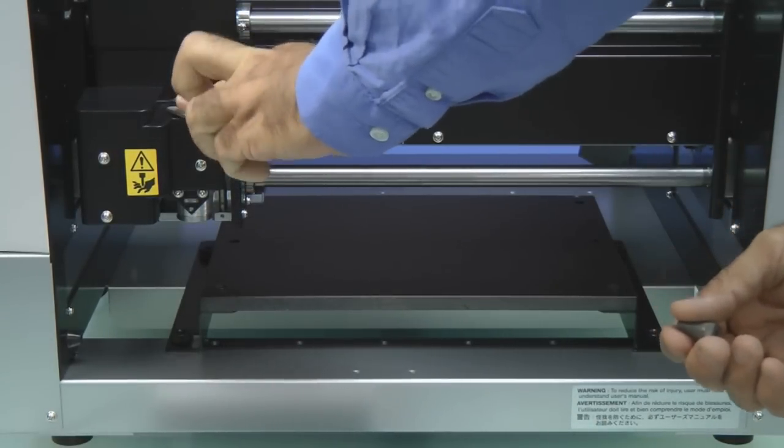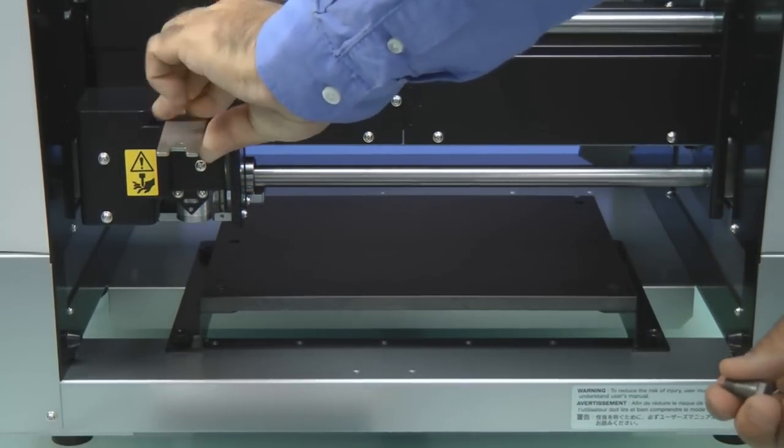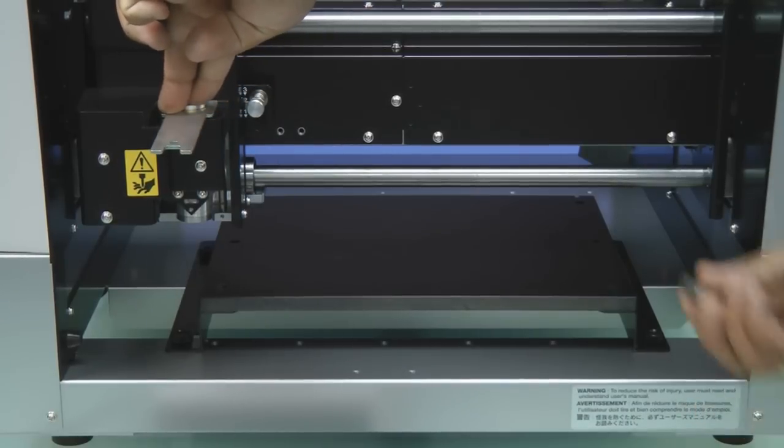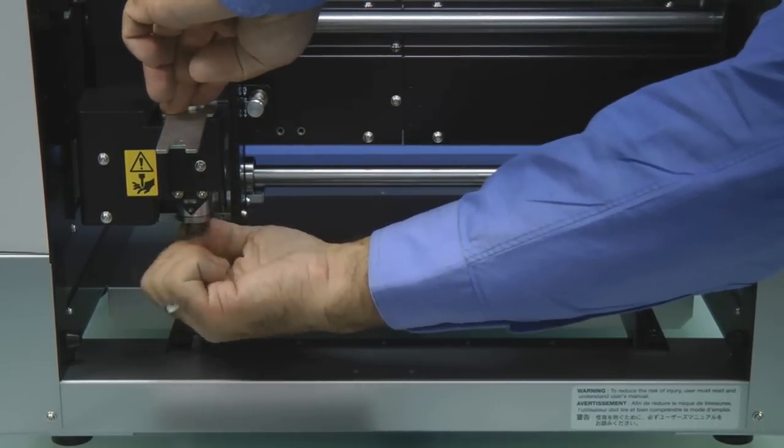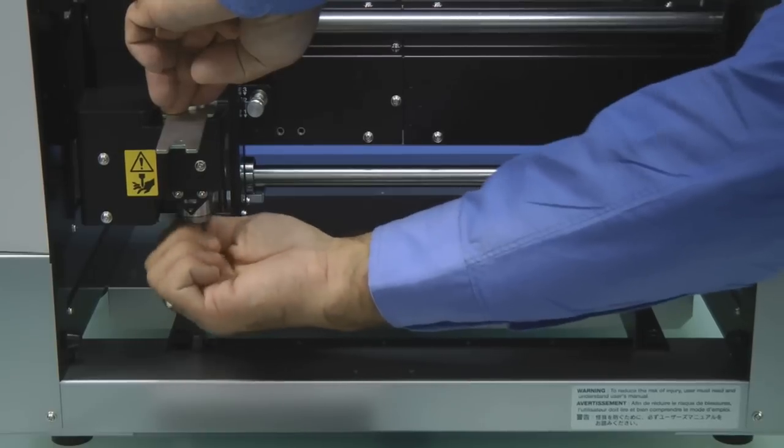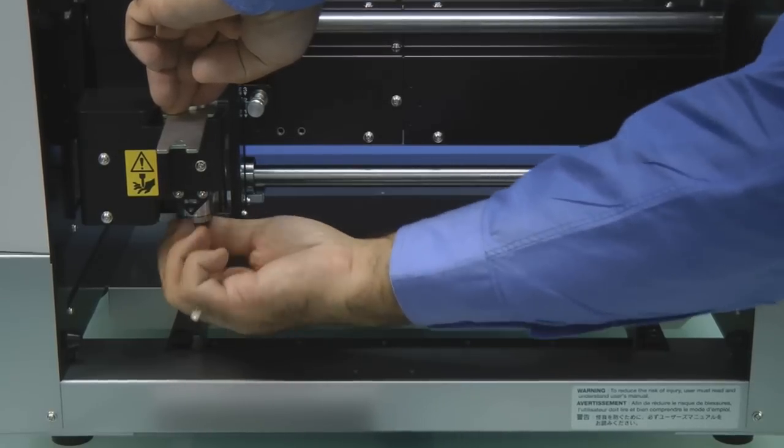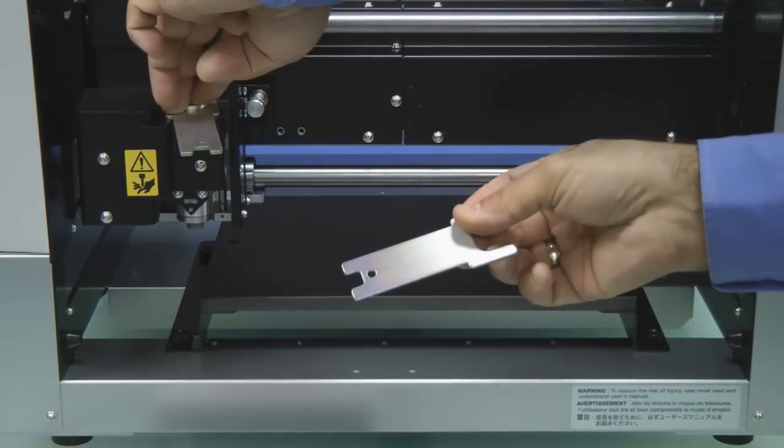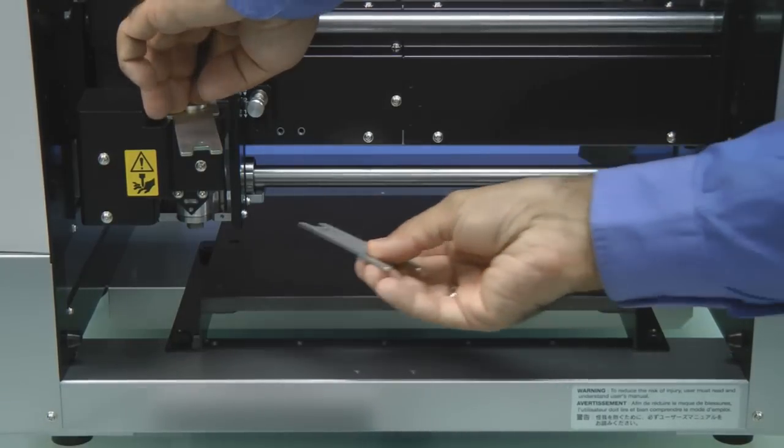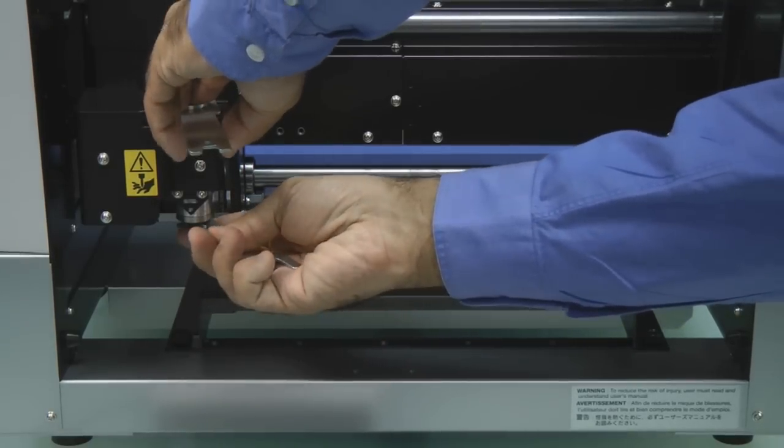We want to set the spanner wrench on the top of the spindle and then take our collet to the bottom of the spindle and install it, which is reverse threaded manually. Once the collet is snug, we want to set our second spanner on the bottom to tighten it down.